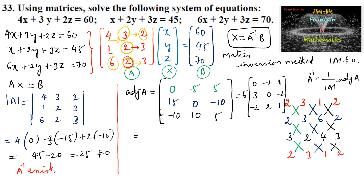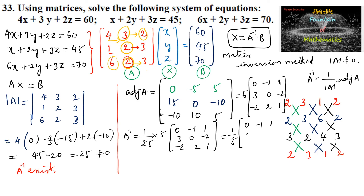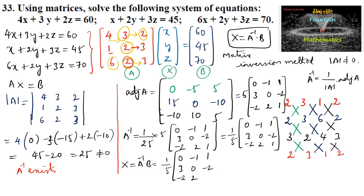Now, A inverse equals 1 over det(A), which is 1 over 25, times 5 times the matrix: 0, negative 1, 1 / 3, 0, negative 2 / negative 2, 2, 1. This simplifies to 1 over 5 times the matrix: 0, negative 1, 1 / 3, 0, negative 2 / negative 2, 2, 1. The variable matrix X equals A inverse times B, so we compute 1 over 5 times that matrix, multiplied by the column matrix 60, 45, 70.